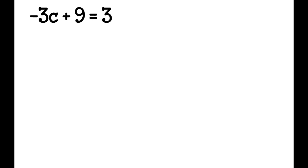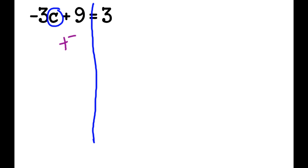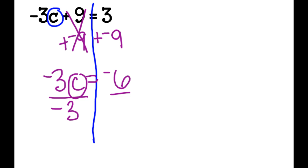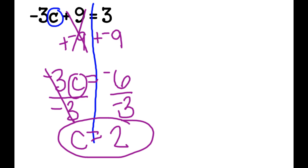I show the different sides of my equation and circle my variable c. I ask myself what addition or subtraction needs to be undone — it's not what's being multiplied by c, but what's being added to it. So I add a negative 9 to both sides. Those cancel out, leaving -3c = -6. I divide both sides by negative 3 — negative 6 divided by negative 3 is positive 2. So c equals 2.